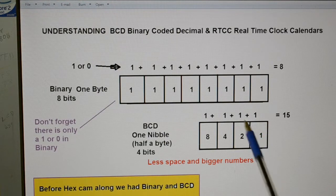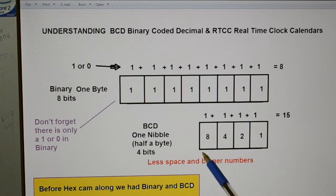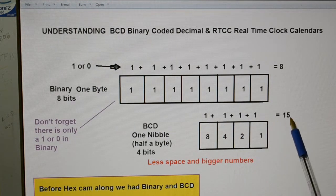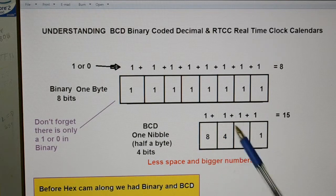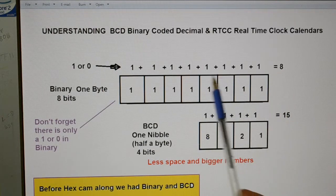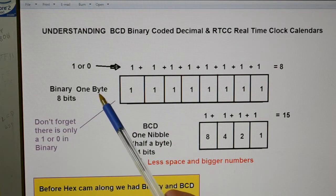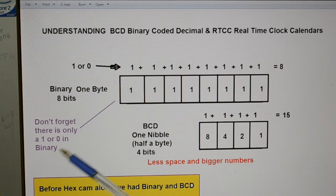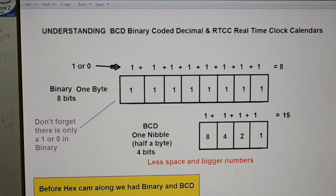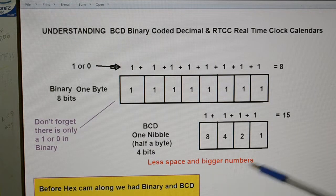So you see if we've got one of them, one of them, one of them and one of them. All of a sudden it equals 15 in just 4 spaces instead of 8 in 8 spaces. So 8 bits equals 1 byte. Don't forget there's only 1 or 0 in binary. That's a nibble. Less space, bigger numbers.